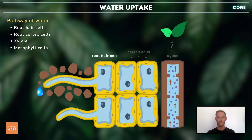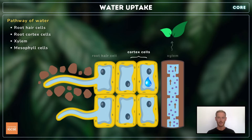Next, you need to know the pathway that water takes through the plant. Water from the soil enters the root via the root hair cells, down a concentration gradient. From there, it moves into the root cortex, the space between the epidermis and vascular bundle. It's not known for sure how water moves through the cells of the cortex, although most is thought to pass within or between the cell walls.